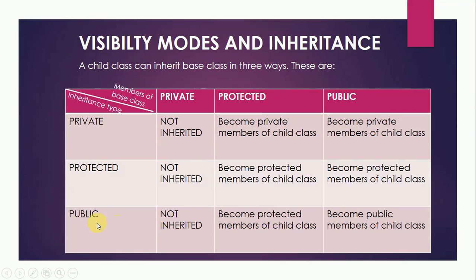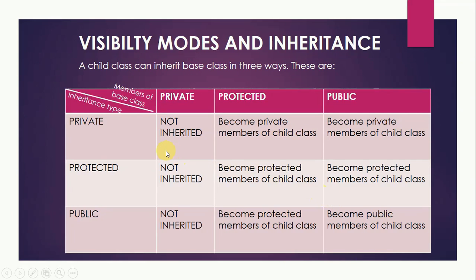In public inheritance, the private members of the base class are not inherited and the protected members of the base class become the protected members of the child class. And public members of the base class become public members of the child class. It is very important to learn all these three aspects of inheritance.